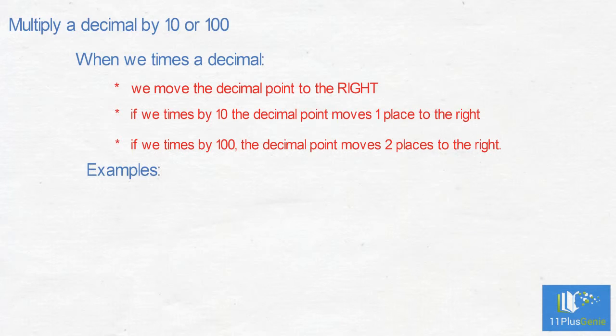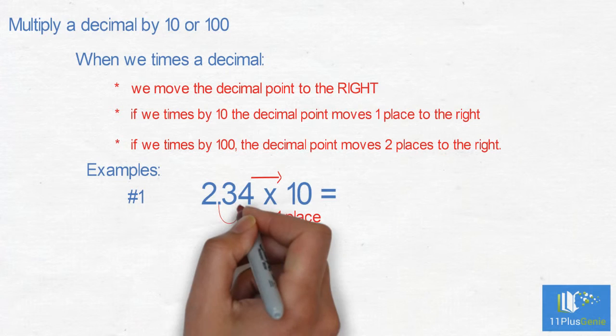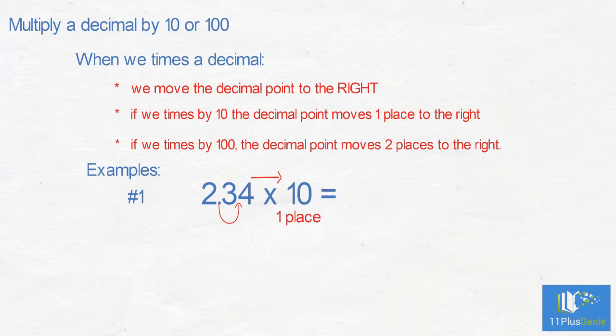Example 1: 2.34 times 10. Times means the decimal point moves to the right. 10 moves it one place. 2.34 times 10 equals 23.4.